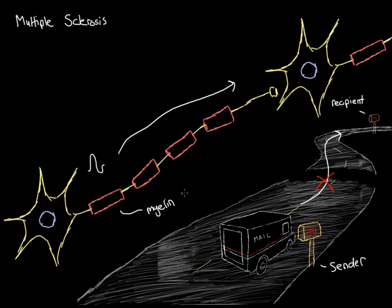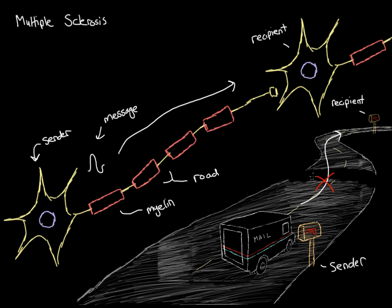We can compare this communication system to our mailman analogy. The sender of the message is the first neuron. The message is the action potential. The road would be the myelin and the axon together. And we have the recipient. In our analogy, an earthquake destroyed the road. In multiple sclerosis, you get destruction of the road — more specifically, a degradation of the myelin. Because of this degradation of myelin, we can call multiple sclerosis a demyelinating disease.